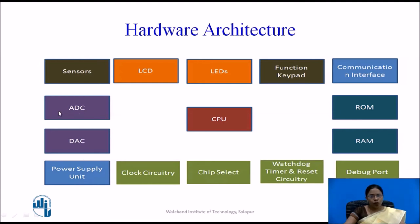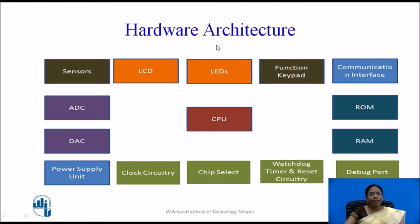The ADC takes analog data and converts it to digital form; the DAC does the opposite, converting digital data to analog. Analog data comes from sensors, which capture real-world inputs from the environment and convert them into electrical signals for the processor. LCD and LED are output devices for the embedded system, providing visual indications of events. The functional keypad is designed to perform specific functions and can be interfaced with the processor to perform particular tasks as needed.